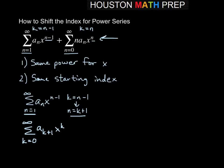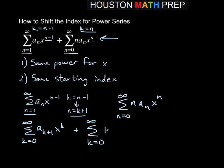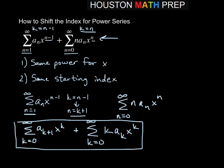Let's take a look at the second one. Here we said k equals n, with n starting at 0, and the series is n times a sub n times x to the n. Since k equals n, that's an easy substitution. Our second one becomes the sum from k equals 0 to infinity. The n becomes a k, a sub n becomes a sub k, and x to the n becomes x to the k.